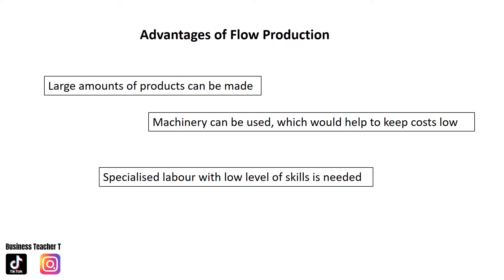Advantages of flow production: large amounts of products can be made, resulting in a higher level of output. The business is also able to benefit from purchasing economies of scale. Machinery can be used which helps to keep costs low, and only specialised labour with a low level of skills is needed.